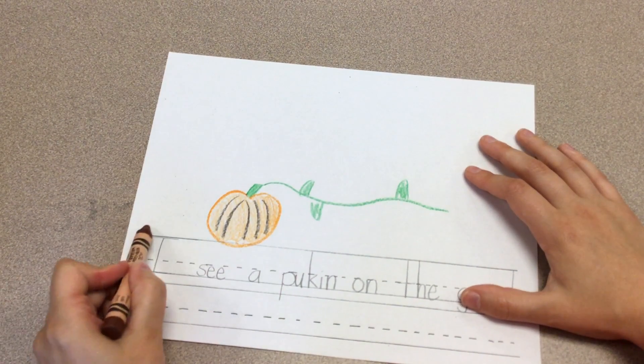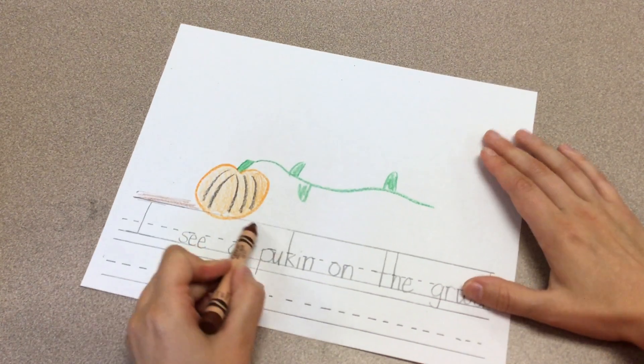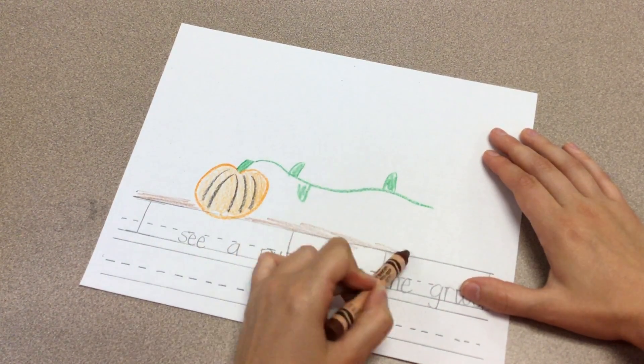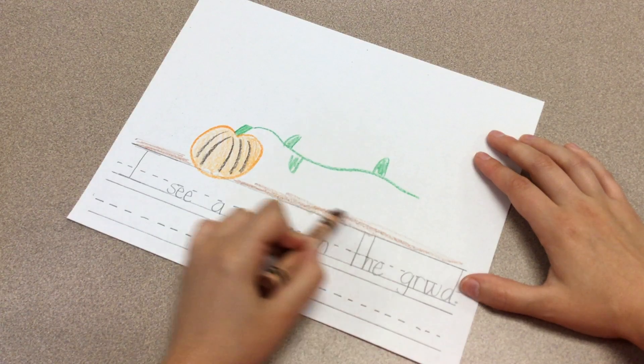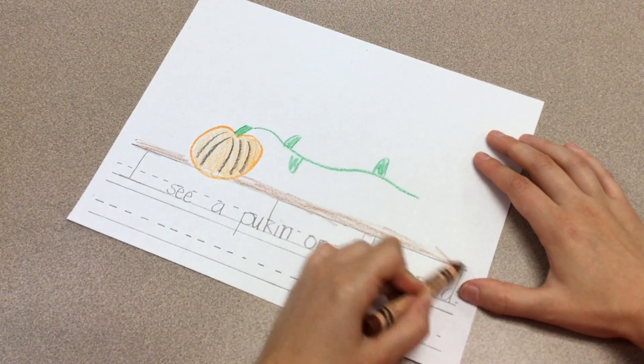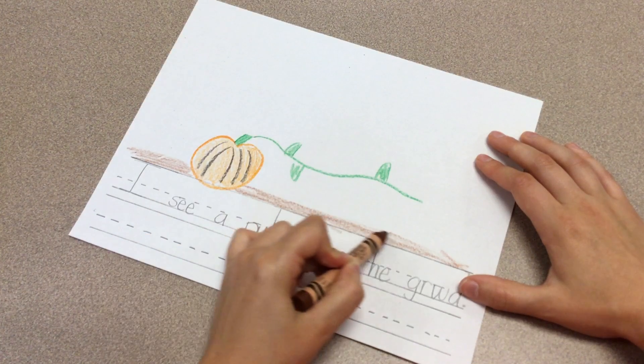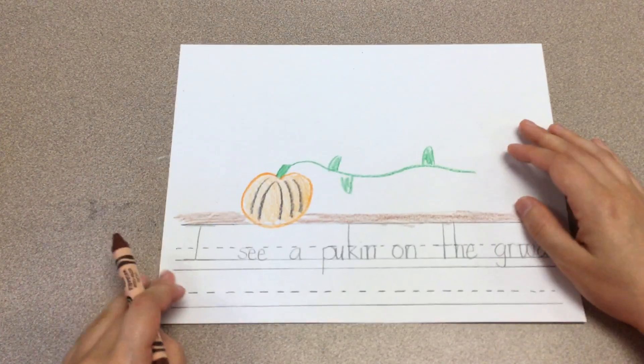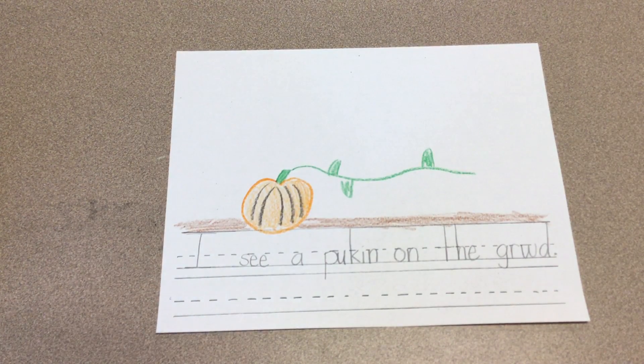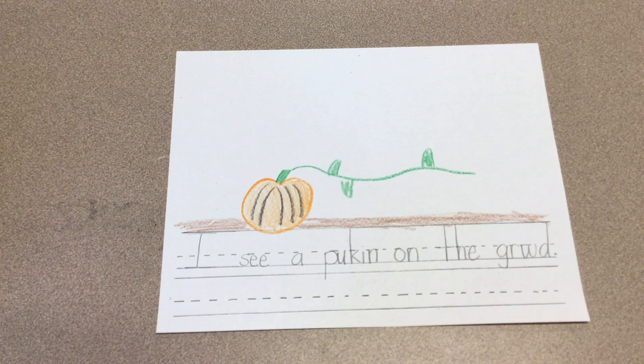Then it's on the ground, I'm gonna add some ground. What else would I see near a pumpkin on the ground? Maybe more pumpkins. What else? It's usually on a farm, right? So maybe other farm things, farm animals, farm vegetables, other things they're harvesting.